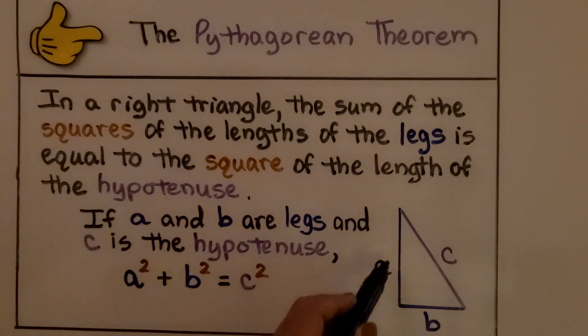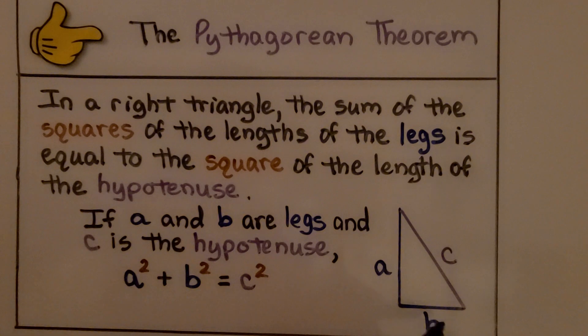Whatever the length of a is, we square it, a times a. Whatever the length of b is, b times b, it's squared, will equal c times c, c squared.